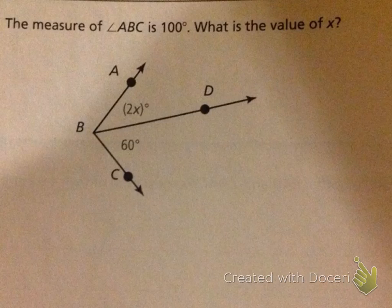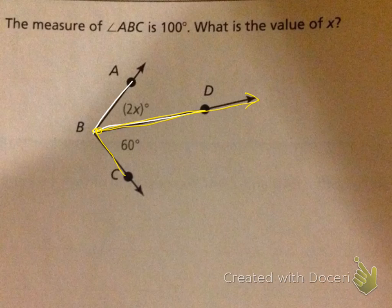So here we have a pair of adjacent angles. Angle ABD is adjacent to angle DBC. They share a ray, don't they? They share a ray.